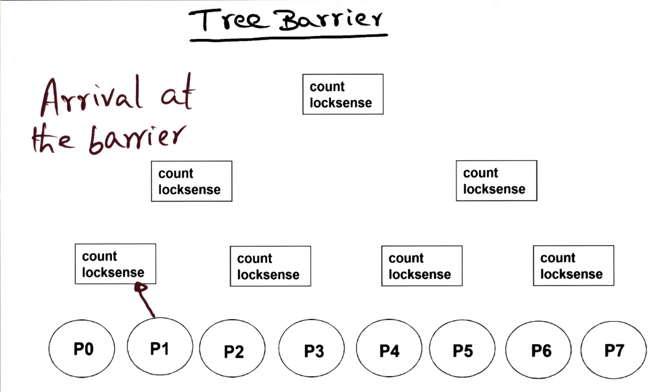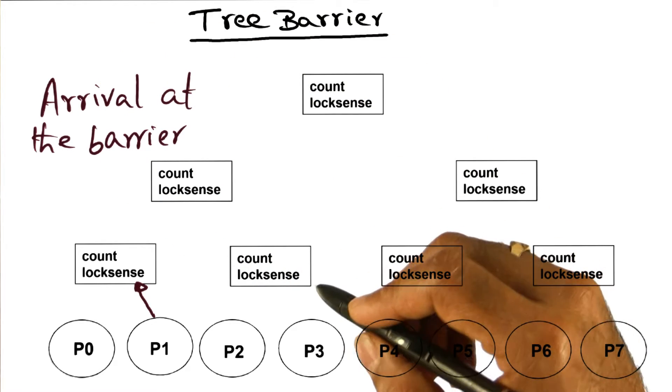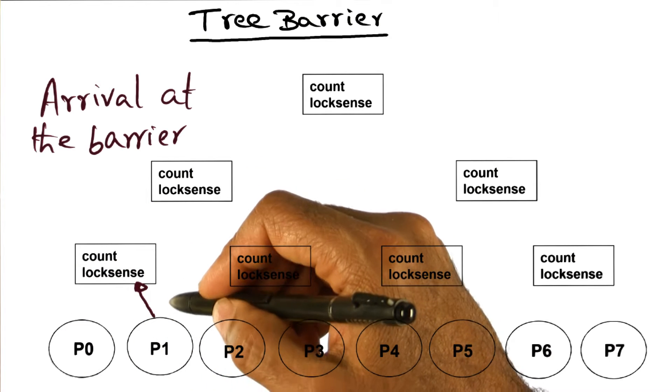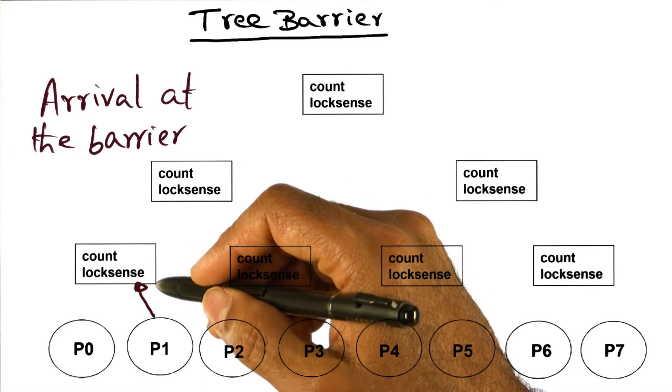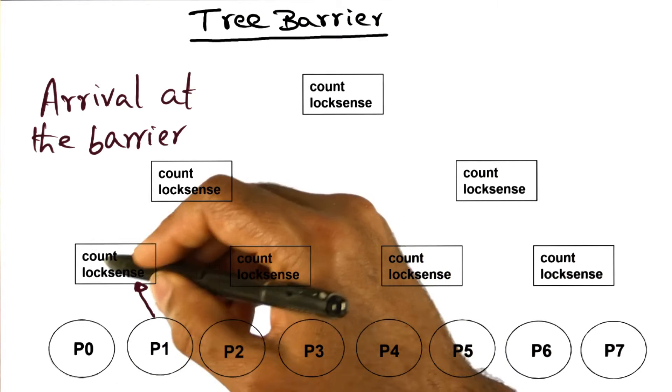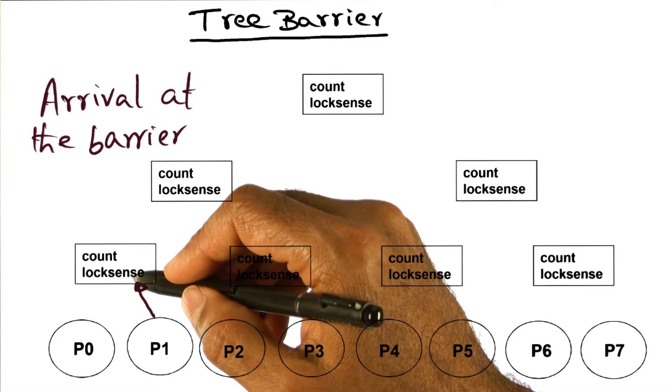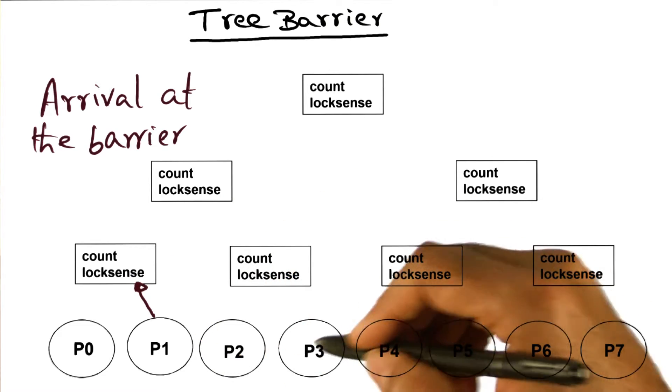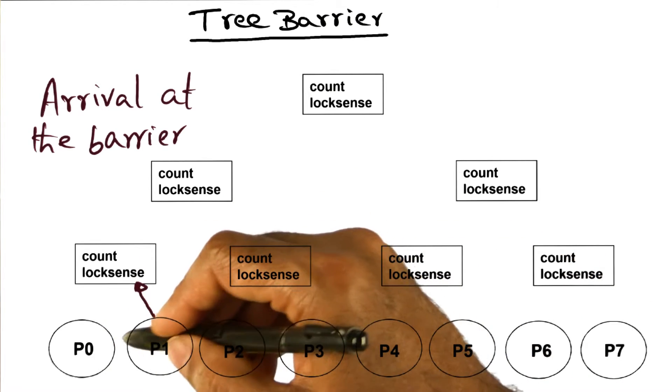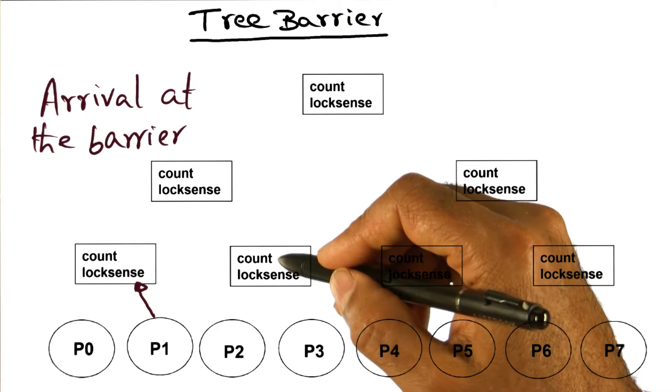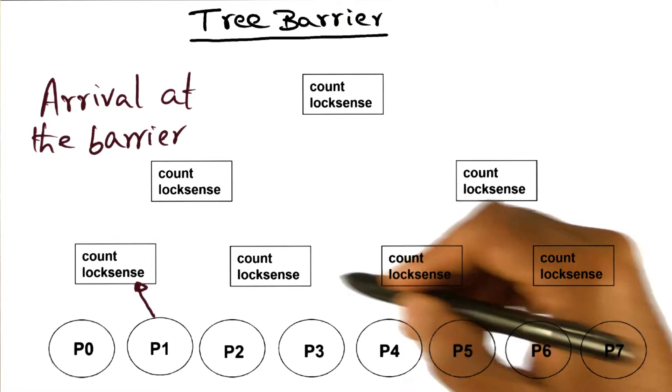So let's talk about what happens when we arrive at a barrier. At a micro level, the algorithm works exactly like a sense reversing algorithm. These two processes, if they are sharing this data structure, a count variable and a log sense variable. And you see that for every k processors, and in this case k being two, every two processors you have these two shared variables, a count variable and a log sense variable.